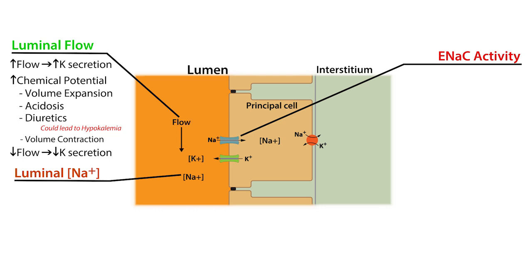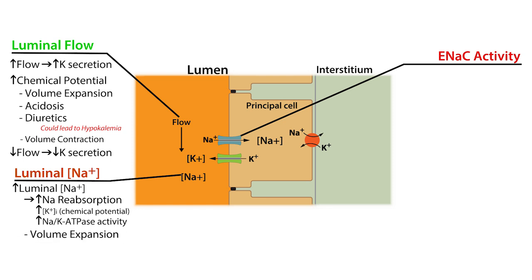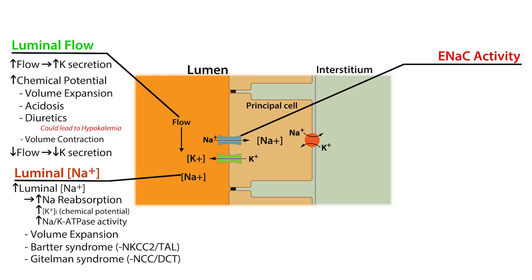Increased luminal sodium also stimulates potassium secretion. Increased luminal sodium increases ENaC-dependent reabsorption of sodium, which makes the luminal potential more negative — favoring potassium secretion — and it increases the potassium chemical potential through activation of the sodium-potassium ATPase. Factors that lead to increased luminal sodium include volume expansion, genetic defects in sodium transport like Bartter's and Gitelman syndrome — characterized by mutations in the NKCC2 and NCC co-transporters respectively — and administration of osmotic, loop, or thiazide diuretics. These conditions are known to cause hypokalemia.